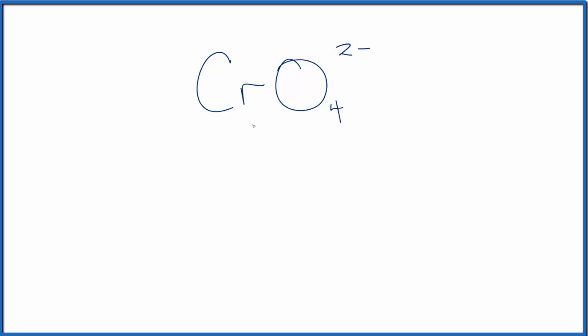So first off, it's a little bit difficult because chromium here, how many valence electrons does chromium have? If you need help finding that out, there's a link in the description to a video on how to find the number of valence electrons for chromium. Turns out it has six.